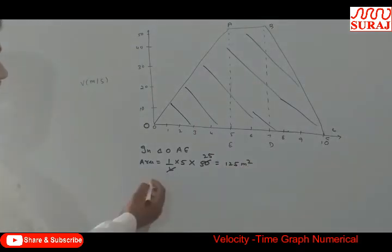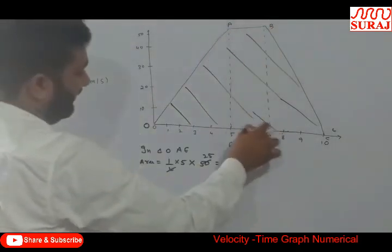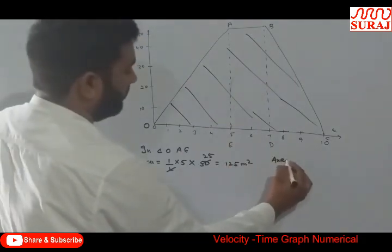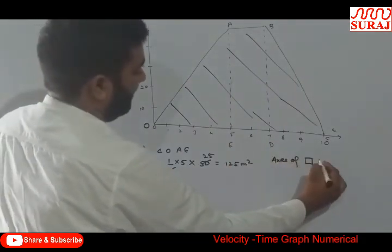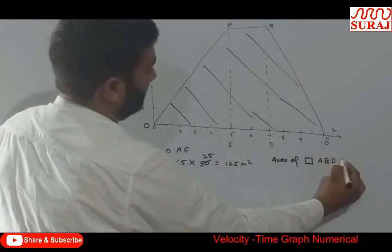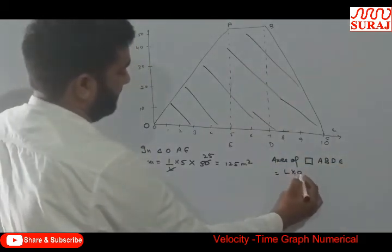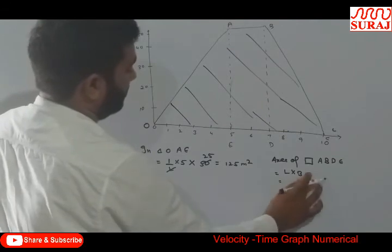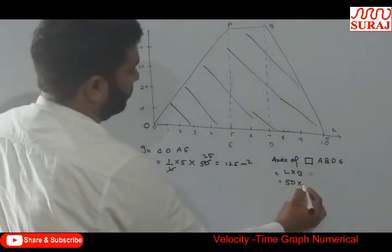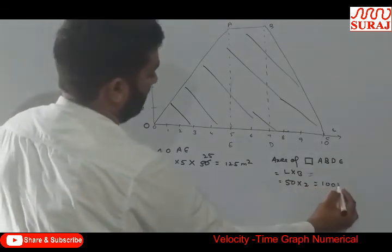Now, this is the rectangle ABDE. So, area of rectangle ABDE, length into breadth is equal to 50 into 2. That is equal to 100 meters.